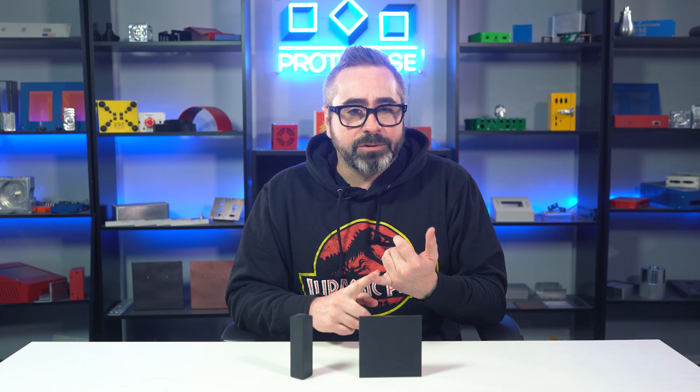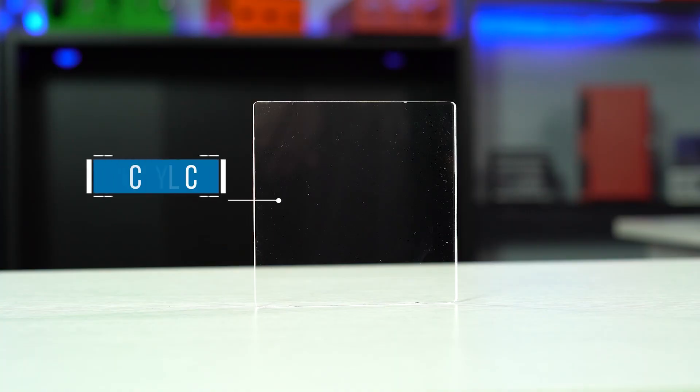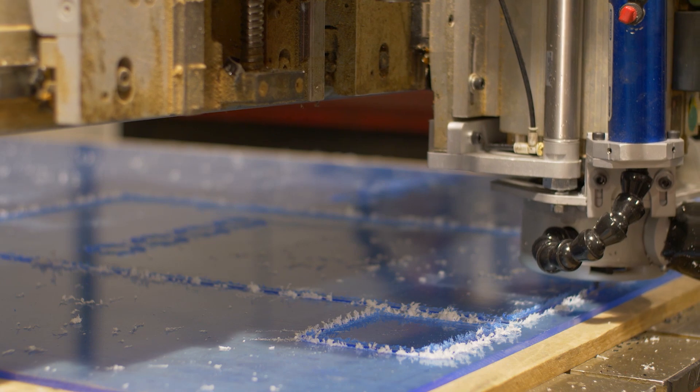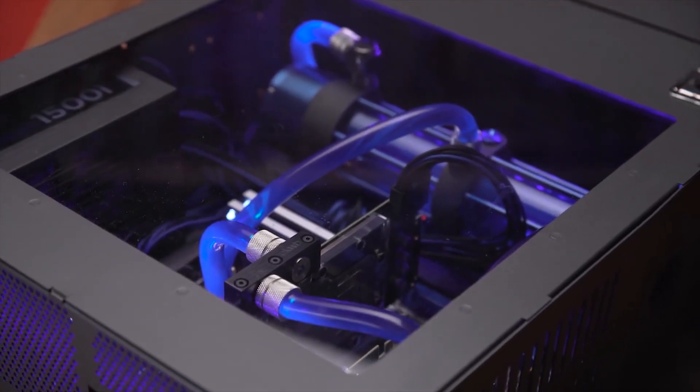When manufacturing your parts with Protocase, you can incorporate plastics in a number of ways, like adding an acrylic window to your enclosures or 3D printing components. We've got a Proto Tech Tip video that gives a high-level overview of the plastic options at Protocase. Check out the link in the description below.